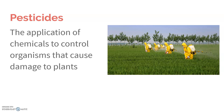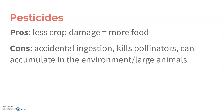Pesticides are the application of chemicals to control organisms that cause damage to plants. We do see less crop damage and therefore more food, but they can lead to accidental ingestion. A lot of them are neurotoxins — they're designed to kill an organism, so there's something in them that's not good to have. That's why it's really important to wash your vegetables. We also see a decrease in natural pollinators like bees and butterflies, because they get killed by pesticides. They can also accumulate in the environment, especially in large animals — particularly DDT. I would encourage you to look up that story.